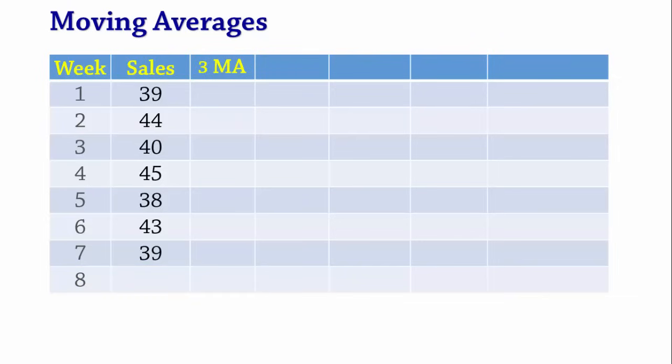We start by calculating the moving average for the 4th week. That is, we average the sales values for the first 3 weeks to produce a moving average forecast for week 4. Thus, the moving average forecast for week 4 is 39 plus 44 plus 40 divided by 3 which gives 41.